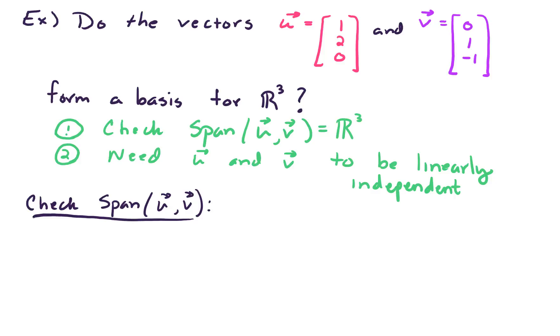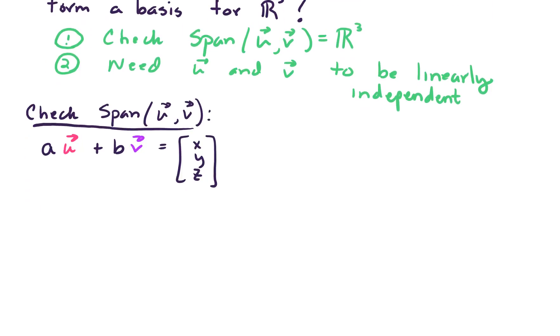Well to do this we are simply asking what kinds of vectors can we build when we do linear combinations of vector u times some scalar, times vector v. What kinds of vectors in the x, y, z, 3-space can we get?